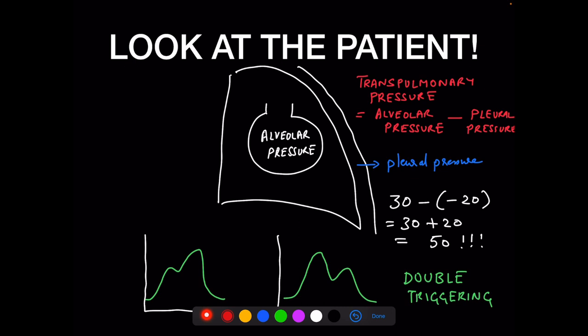Even if plateau pressure appears less than 30, you must look at the patient, because transpulmonary pressure equals plateau pressure minus pleural pressure. If the patient is struggling against the ventilator and generating a pleural pressure of minus 20, the transpulmonary pressure is not 30 — it's 30 minus (−20) = 50 cmH2O. Barotrauma can therefore occur even with a plateau pressure of 30 if you forget about pleural pressure.